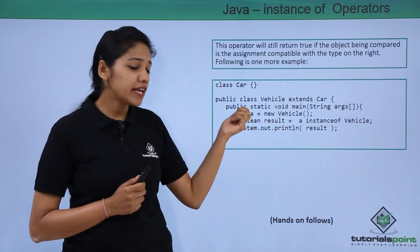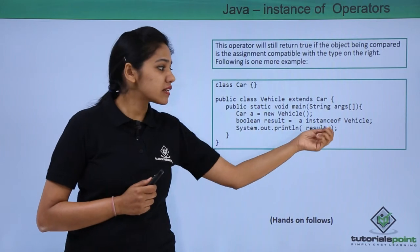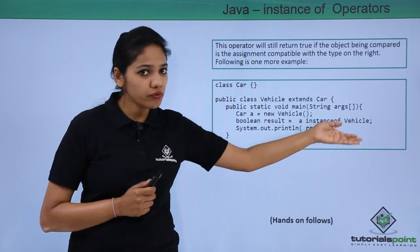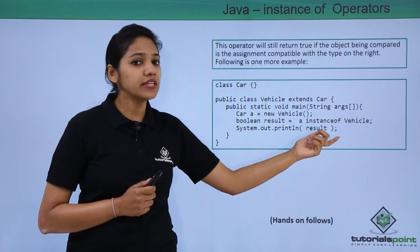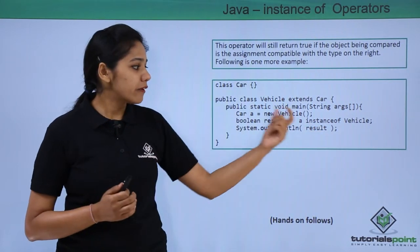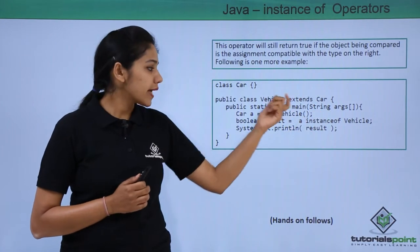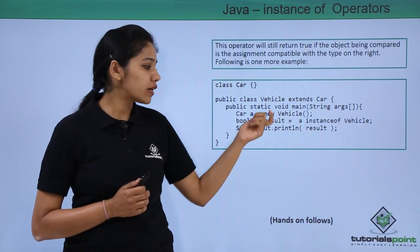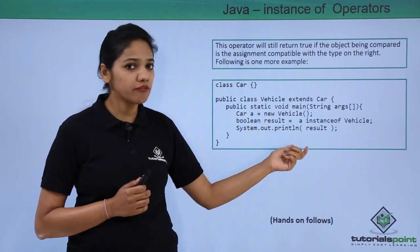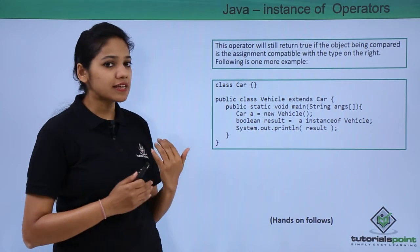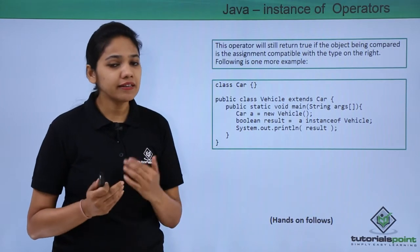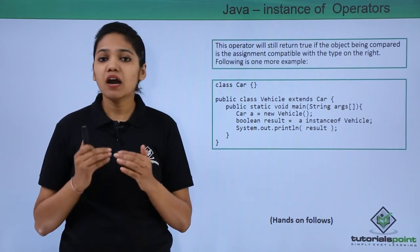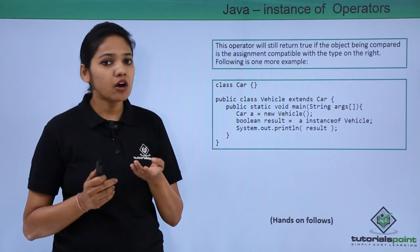Our statement then checks: if a is an instance of Vehicle — if Car is a type of Vehicle. In this case, yes, Car is a type of Vehicle, so the value will be true and stored in result. If it were not, the value would be false. We will run both examples practically to see what happens and what the output is for each statement.